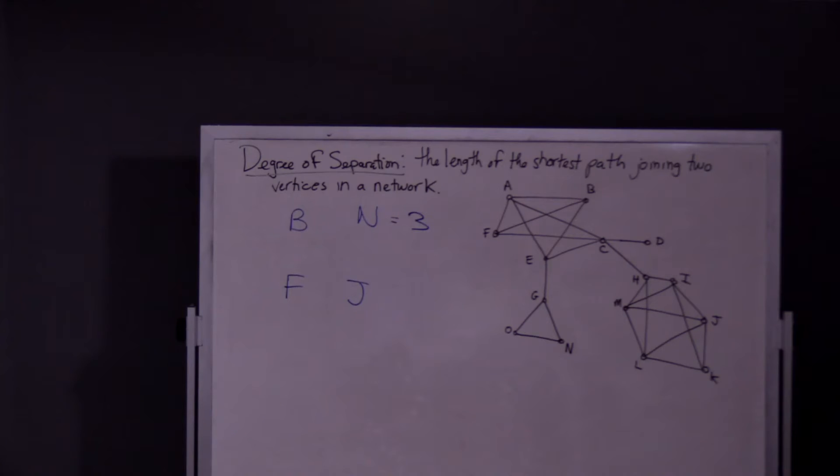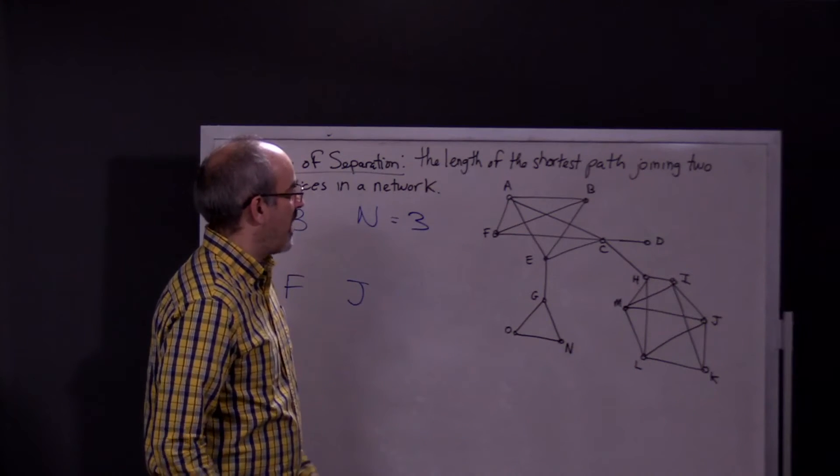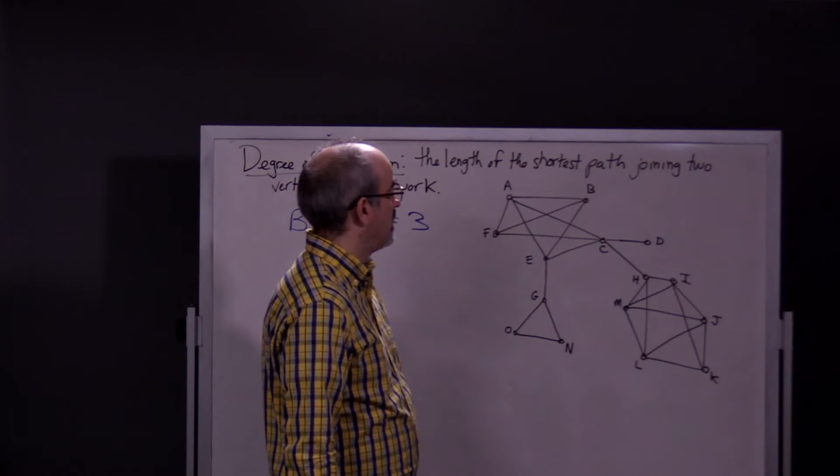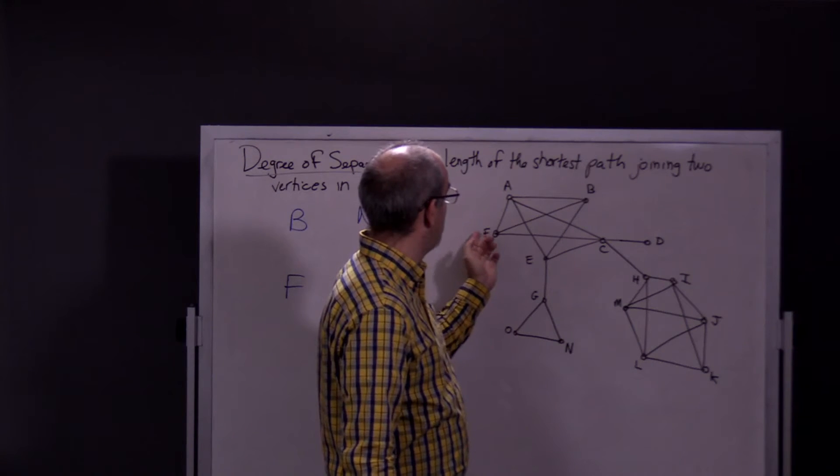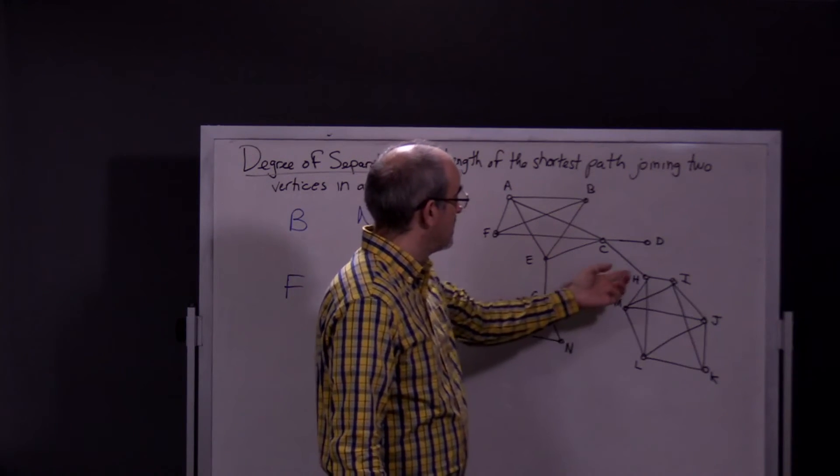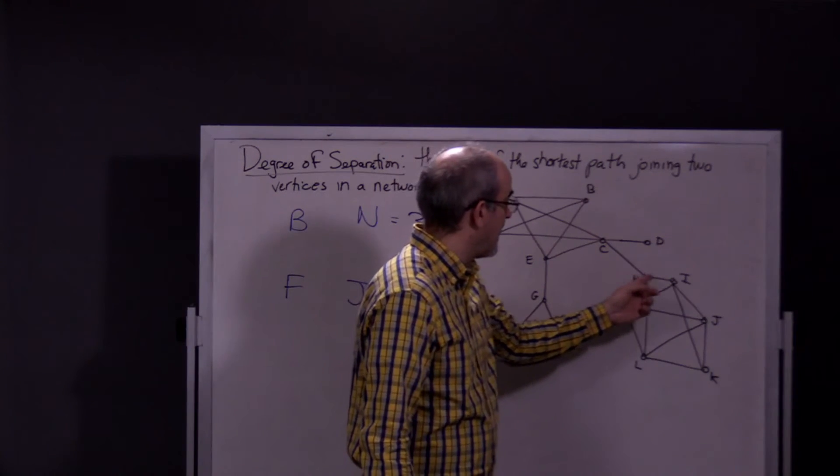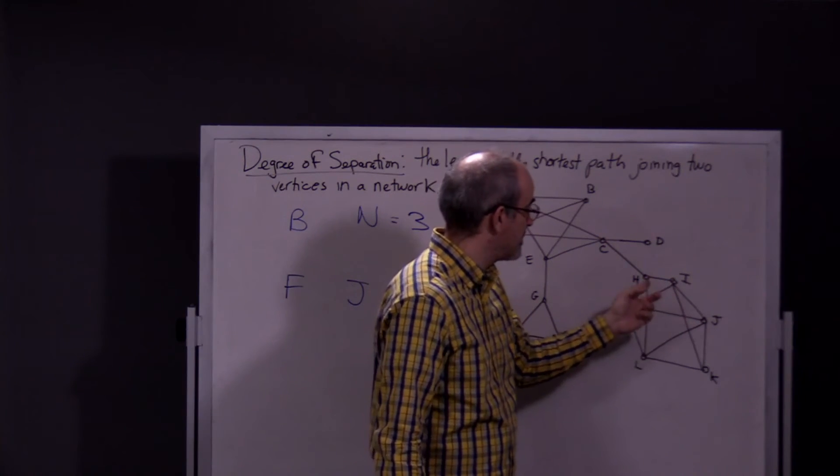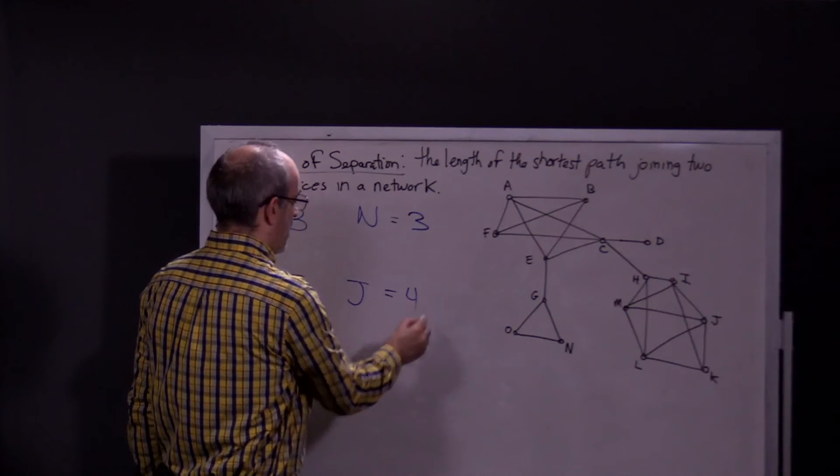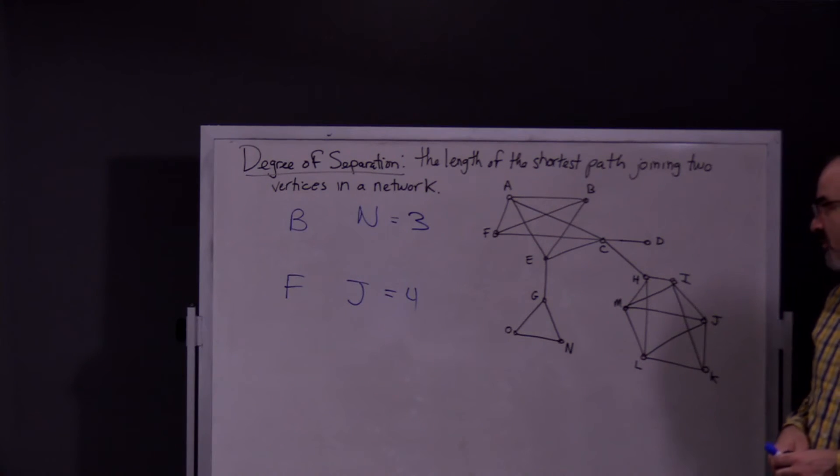So, F and J. So, obviously, to get from F to J, you'd have to go through C. So, there is an actual pathway from F to C. So, we're going to go from F to C, so that's one. And, obviously, you're going to have to go to H, so that's two. Then I. There's not a pathway from H to J, so we go from H to I, then to J. So, that's four. It seems like there's a lot of nodes that have a degree of separation of four.